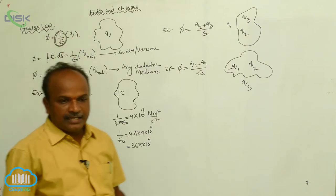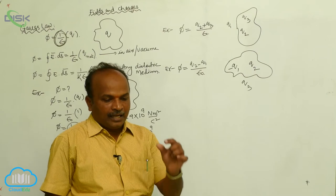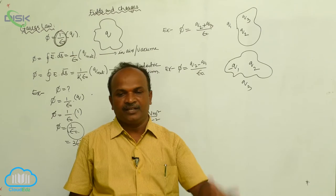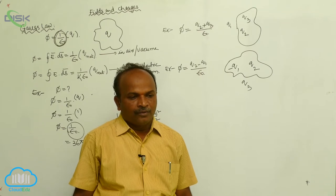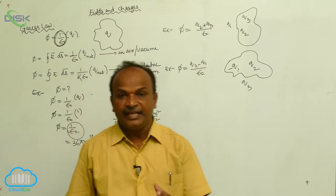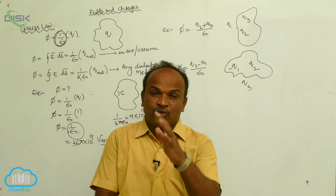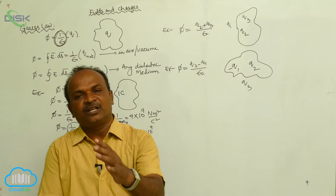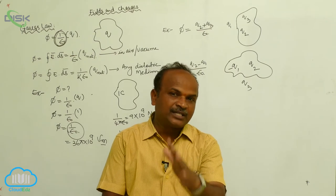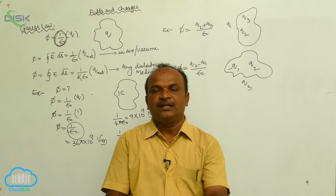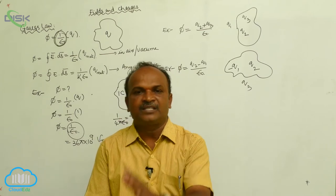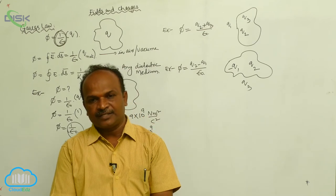Gauss's Law is applicable in the case of distribution of charges to find out the electric field intensity. Whenever you want to apply Gauss's Law, first of all choose any closed surface — that closed surface may be symmetric or may not be symmetric. But if you consider a symmetric closed surface, the calculations are made easy. That's why always try to imagine a Gaussian surface which is symmetric around the distribution of the charge.